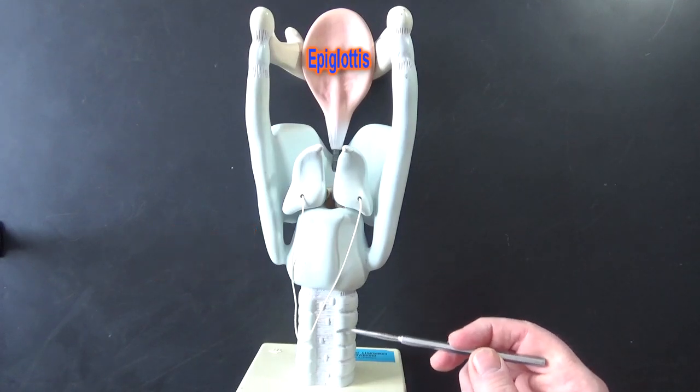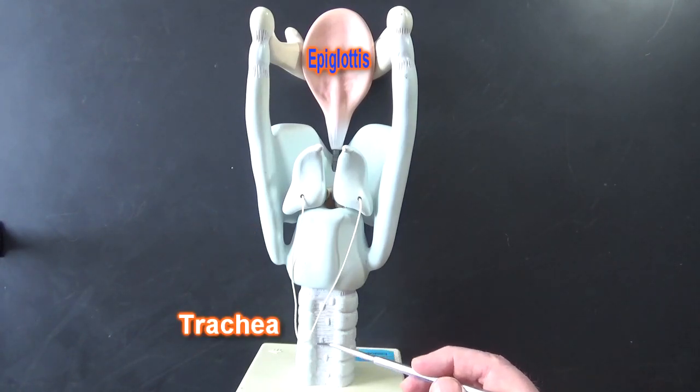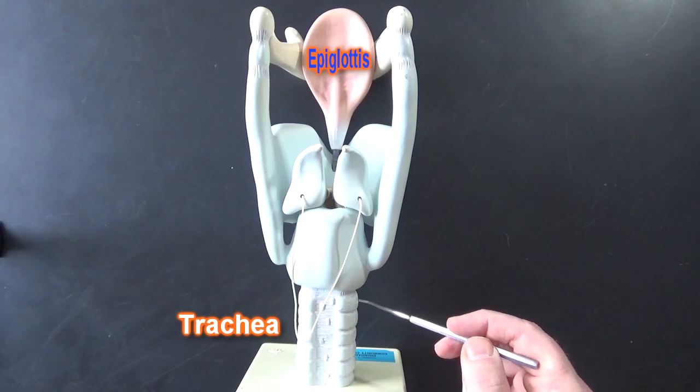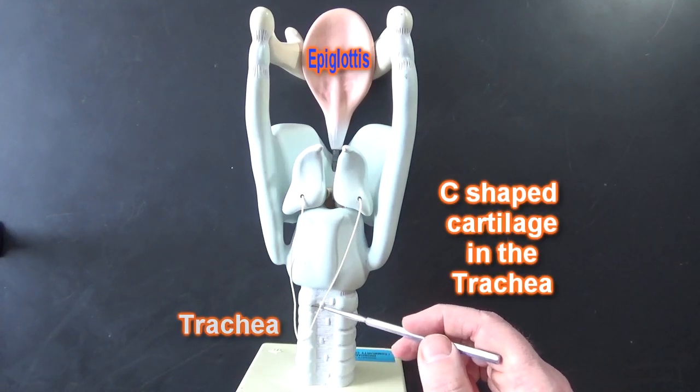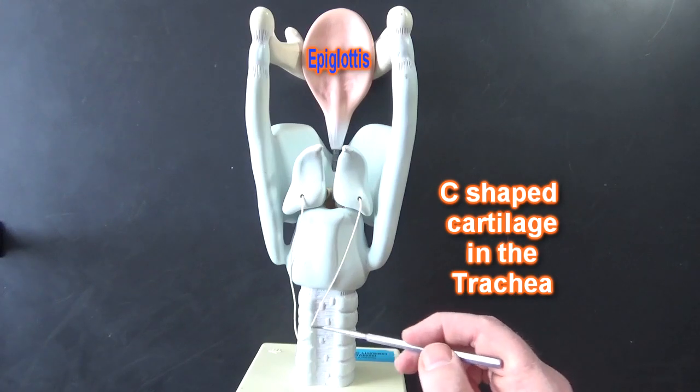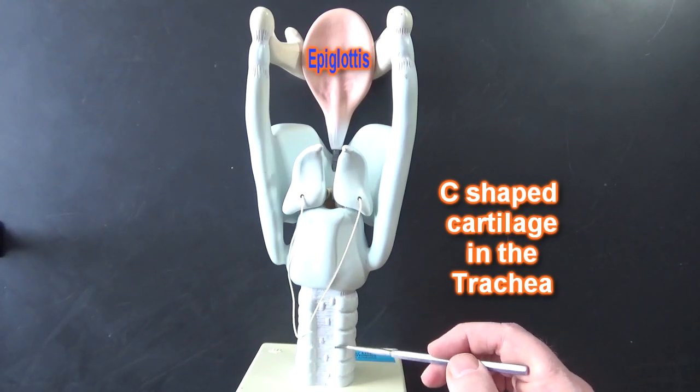Here we can see the trachea down here and notice we've got this void here where the cartilage rings are not complete. They're actually c-shaped cartilage rings in the trachea.